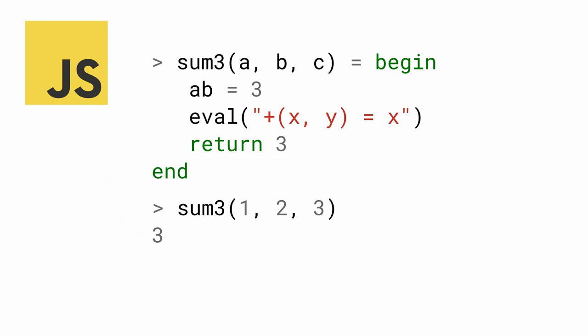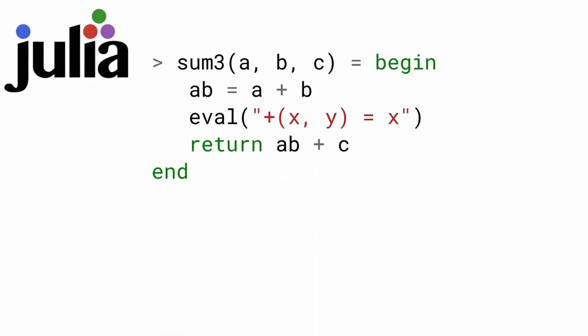In Julia, however, the result is quite different. In Julia, the first call to sum3 runs as if eval didn't happen at all and returns 6, the actual sum of 1, 2, and 3. But the second call to sum3 returns 1. Why is that?